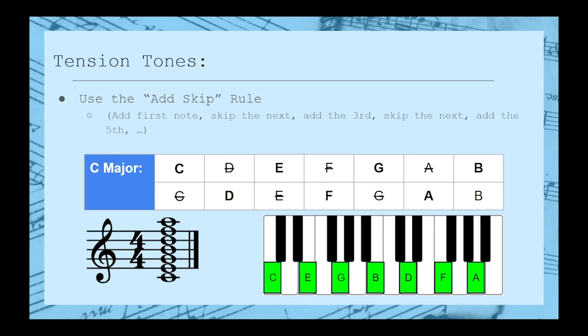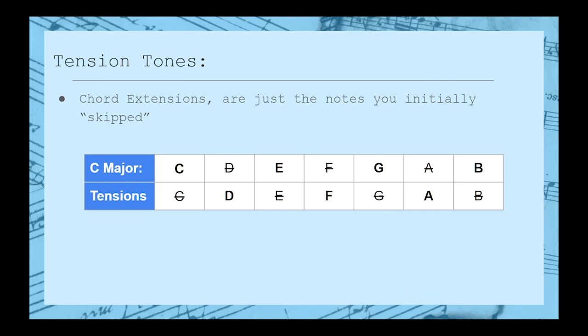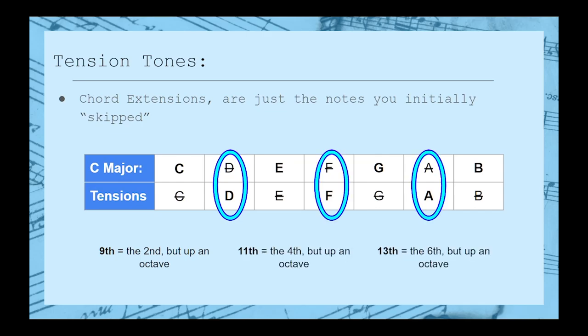In fact, if we look back, we can notice that the extensions are just all the notes we skipped in the original add-skip process. The 9th is just the 2nd, an octave higher. The 11th is the 4th, and the 13th is just the 6th.